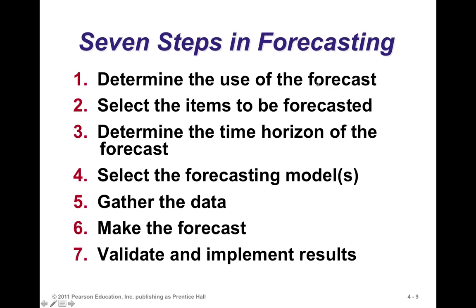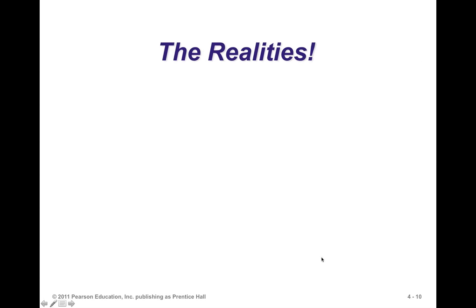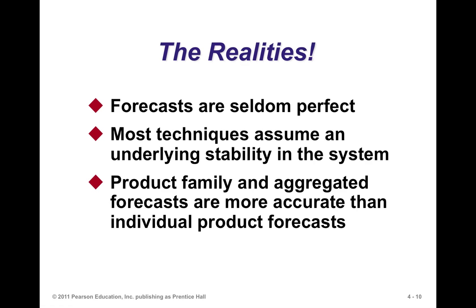In the formal approach, we decide what we're going to use the forecast for, what we're going to forecast, and for how long a period. We then select forecasting models, gather historical data, and make predictions. We compare the predictions with actuals to see how well the models perform, pick the best one, make the forecast, and then validate results — checking the next period to see how close the forecast is to reality.